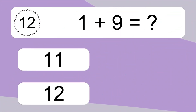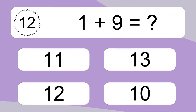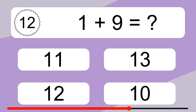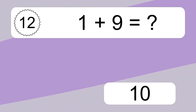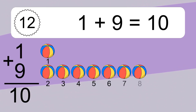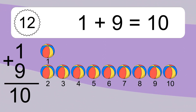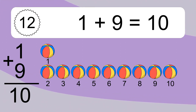1 plus 9 equals what? 1 plus 9 equals 10. Let's count it. 1, 2, 3, 4, 5, 6, 7, 8, 9, 10.